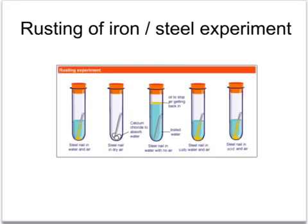To see what other things affect rusting, the fourth picture has the nail in contact with air, water, and also salt. And in the fifth one, air, water, and also dilute acid.